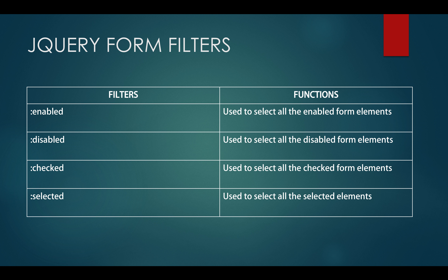The enabled selector is used for selecting all the form elements that are currently enabled, and disabled selects all elements that are currently disabled. The checked selector is used for selecting all the form elements that are currently checked — this can be applied only for checkboxes as well as radio buttons. And selected is used for selecting the particular element that is being selected in case of a dropdown box. Also, if you want to select a particular element that is not checked, you can use the not selector from the previous videos.